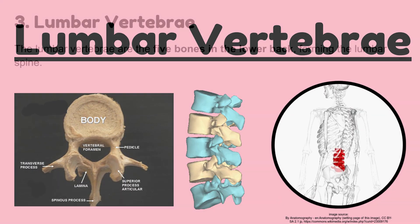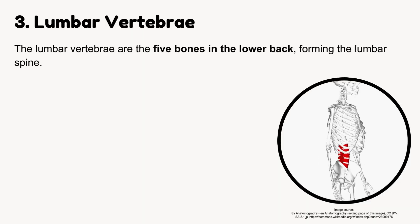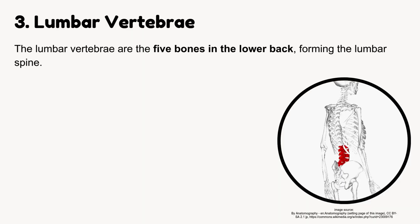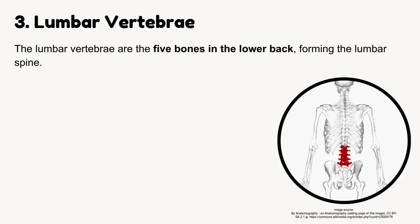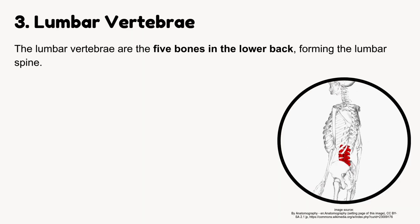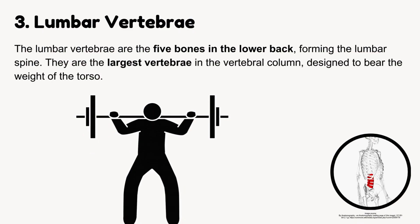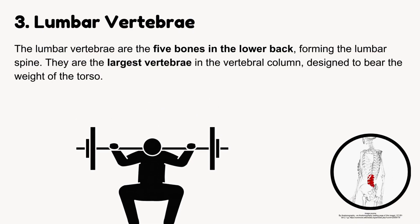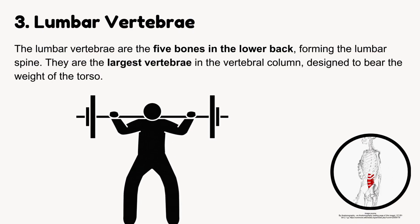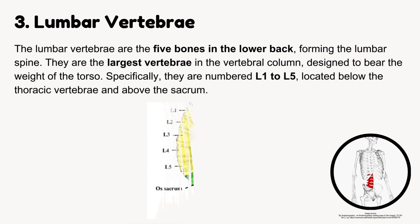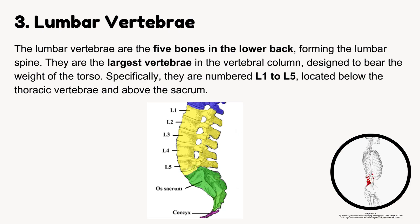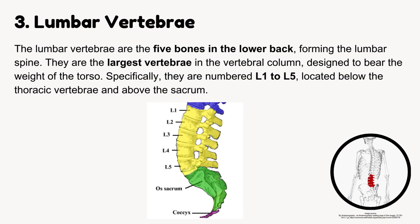Lumbar vertebrae. The lumbar vertebrae are the five bones in the lower back, forming the lumbar spine. They are the largest vertebrae in the vertebral column, designed to bear the weight of the torso. They are numbered L1 to L5, located below the thoracic vertebrae and above the sacrum.